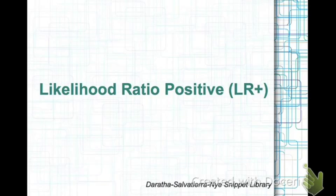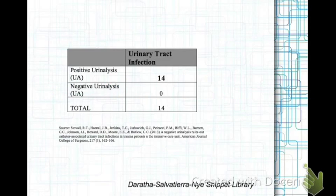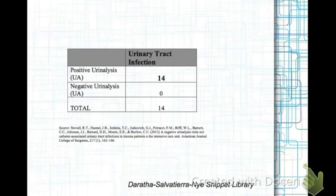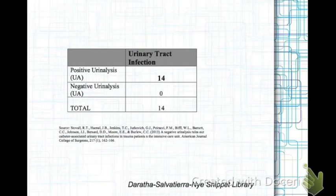Likelihood Ratio Positive is a statistic commonly reported in diagnostic trials that reports the likelihood that a given test result would be expected in a patient with the target condition compared to the patient without the target condition.